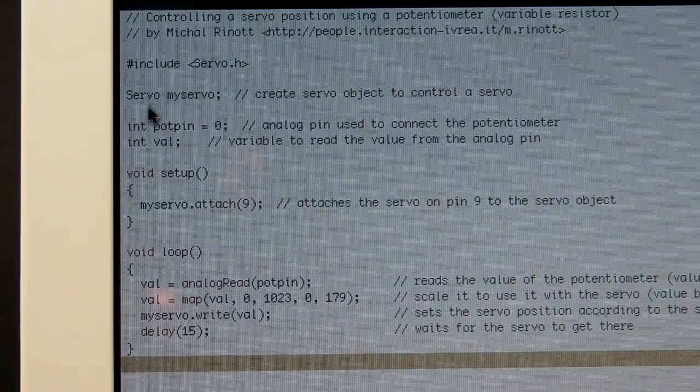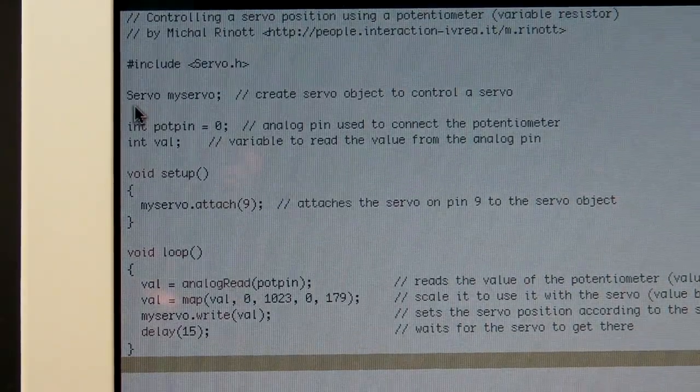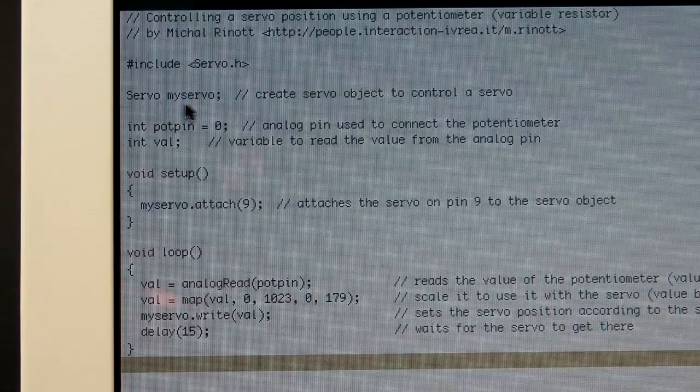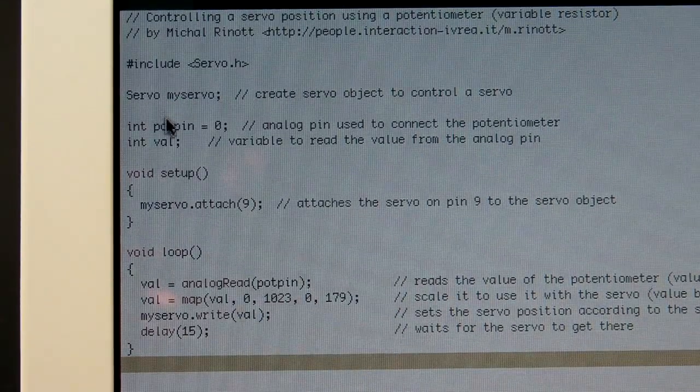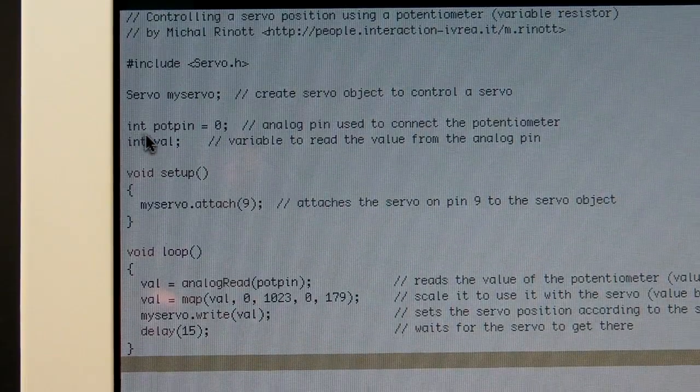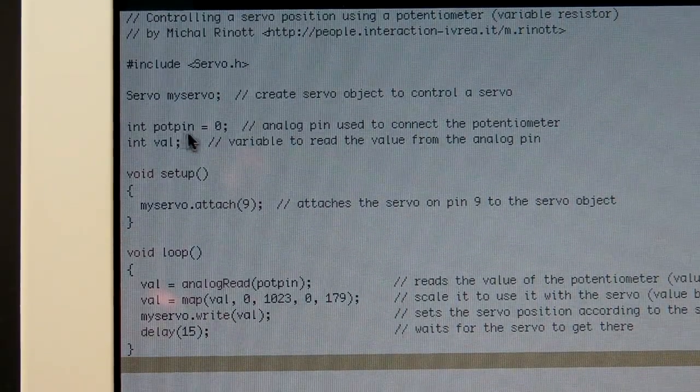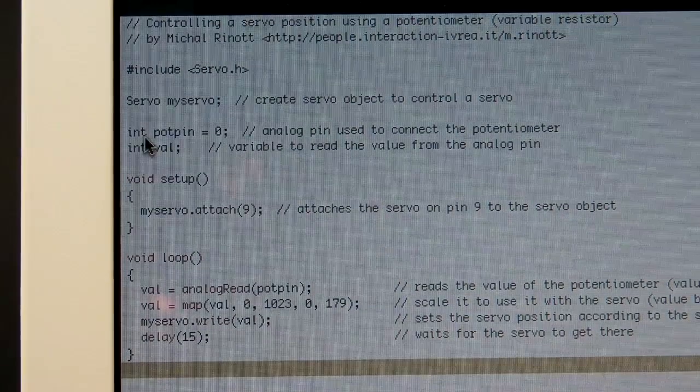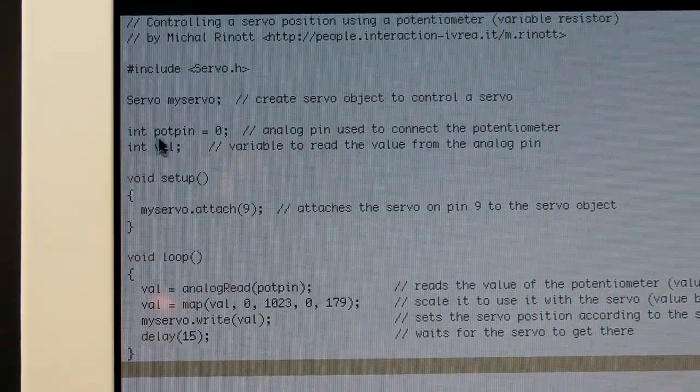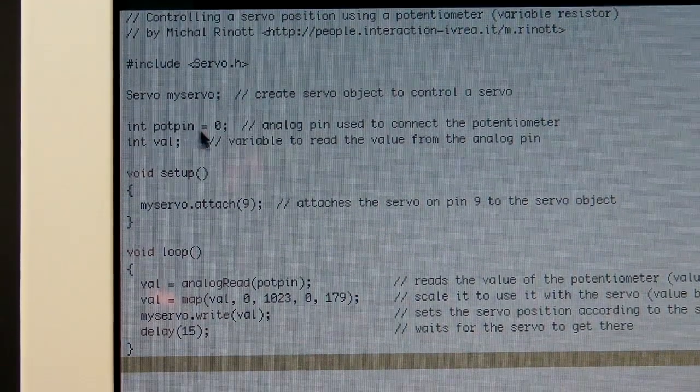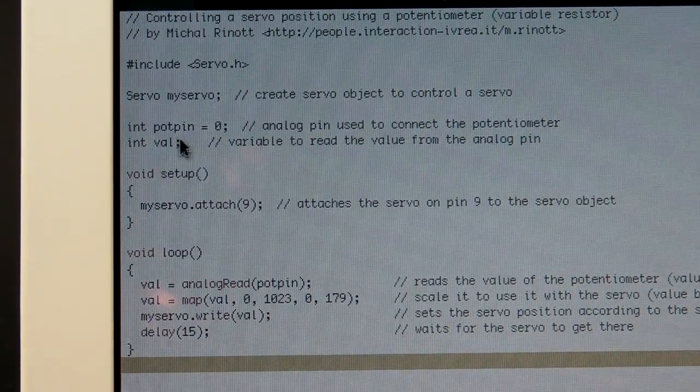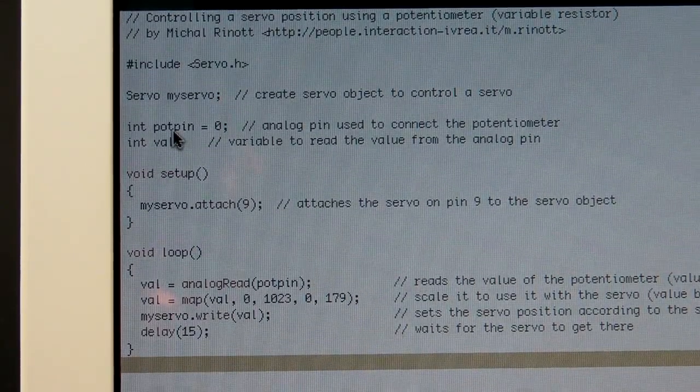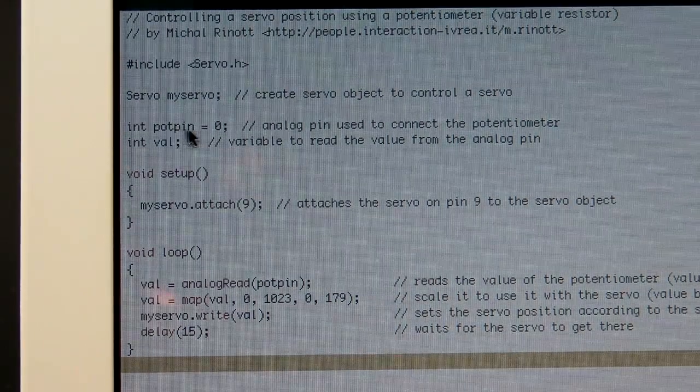When you have a servo library, you need to define a few things. So this is Servo myServo, so you're creating an instance of your servo called myServo. The next one, int potPin equals zero. What that, again we've gone over this before, it's creating an instance of the pot pin and it's going to be zero, which when we look later in the code, that really means that the analog pin zero is actually your potentiometer pin.